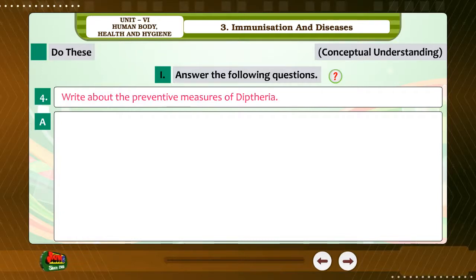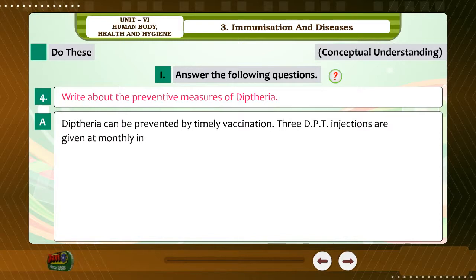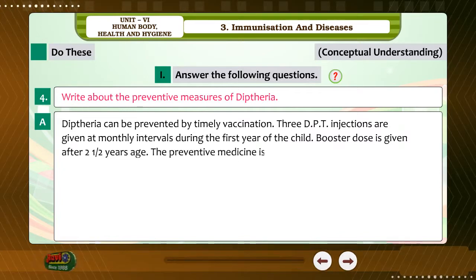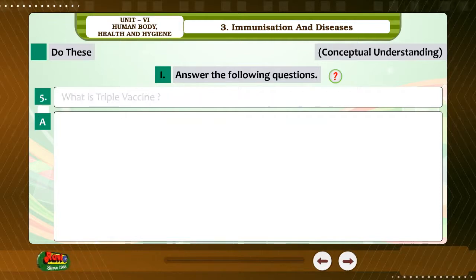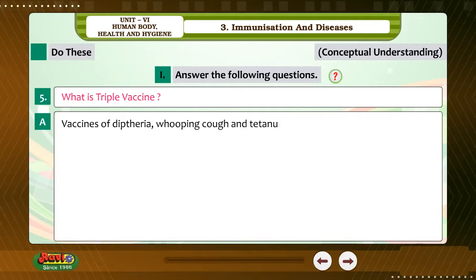Question 4: Write about the preventive measures of diphtheria. Answer: Diphtheria can be prevented by timely vaccination. Three DPT injections are given at monthly intervals during the first year of the child. A booster dose is given after 2 years of age. The preventive medicine is the DPT vaccine.